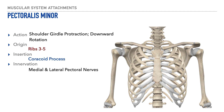The next muscle within our group of pectoral muscles is the pectoralis minor, and its primary actions include shoulder girdle protraction and downward rotation. The muscle originates on ribs three through five, and we'll show those origin points here. Its insertion is at the coracoid process, and lastly its innervation is both the medial and lateral pectoral nerves.